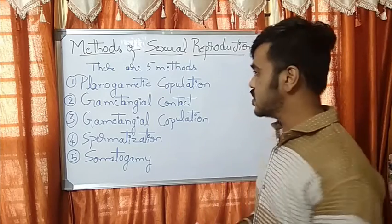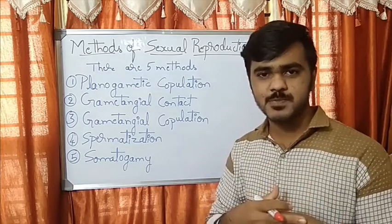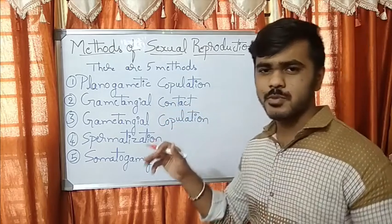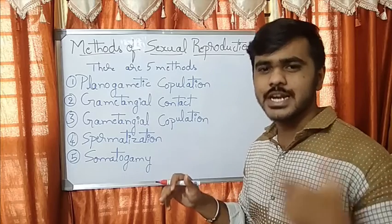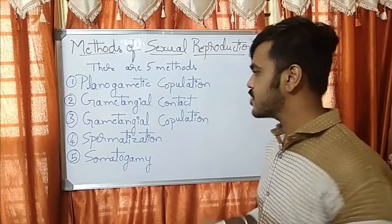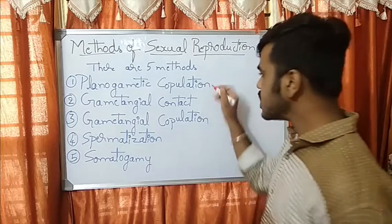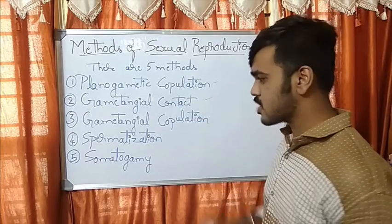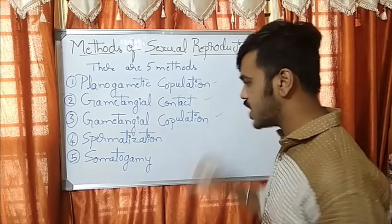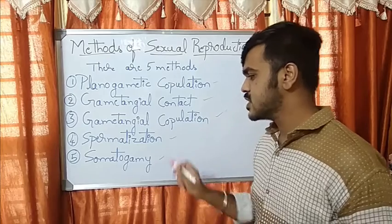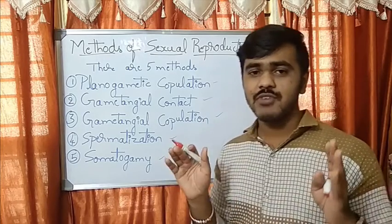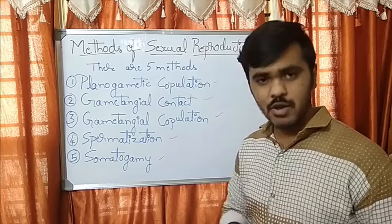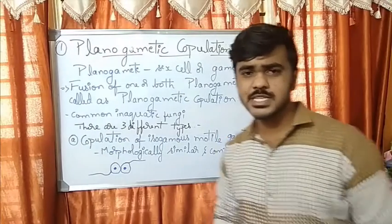There are five major methods through which the fusion of gametes takes place. The five methods are: planogametic copulation, gametangial contact, gametangial copulation, spermatization, and somatogamy. I will explain all of these one by one.